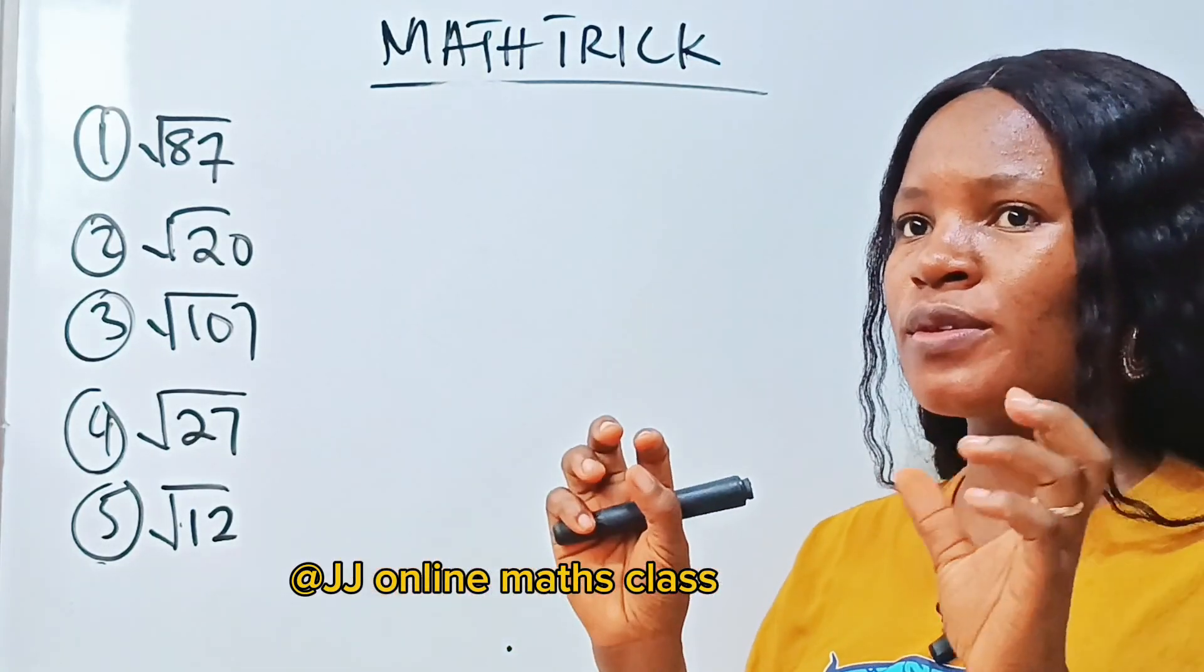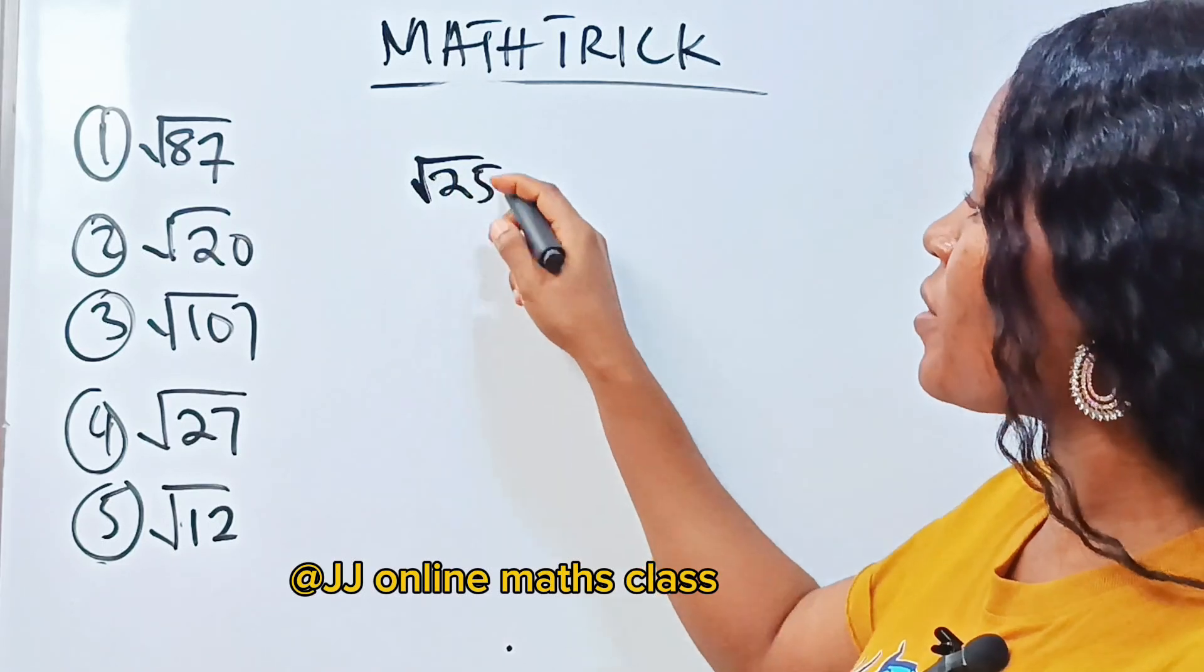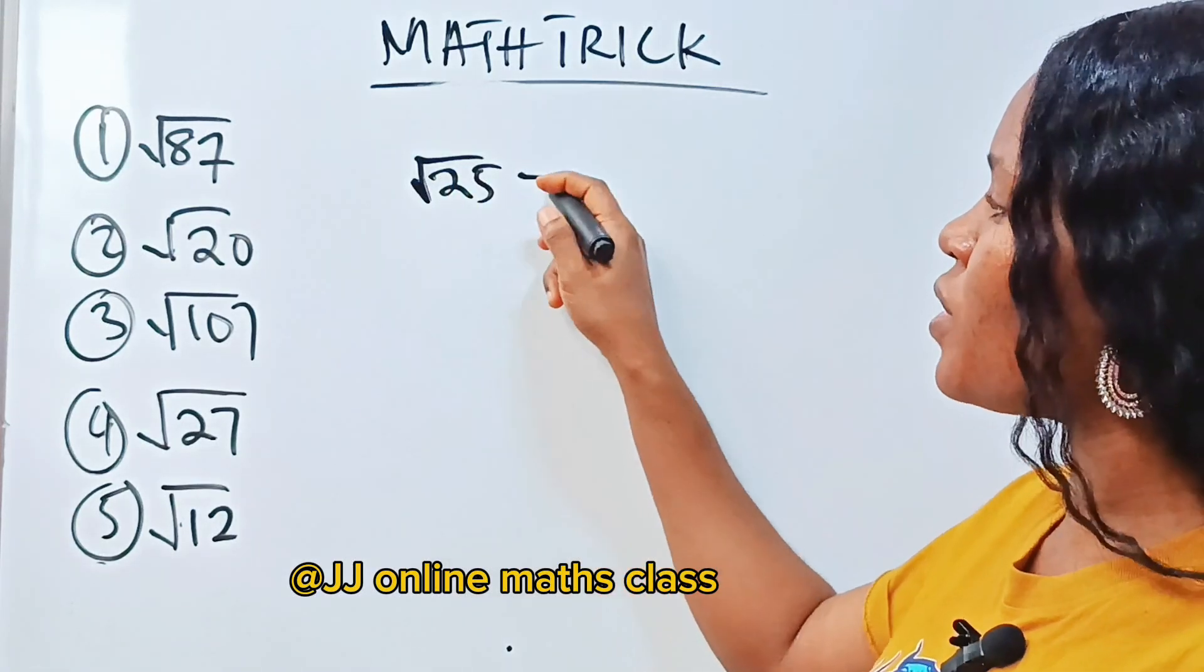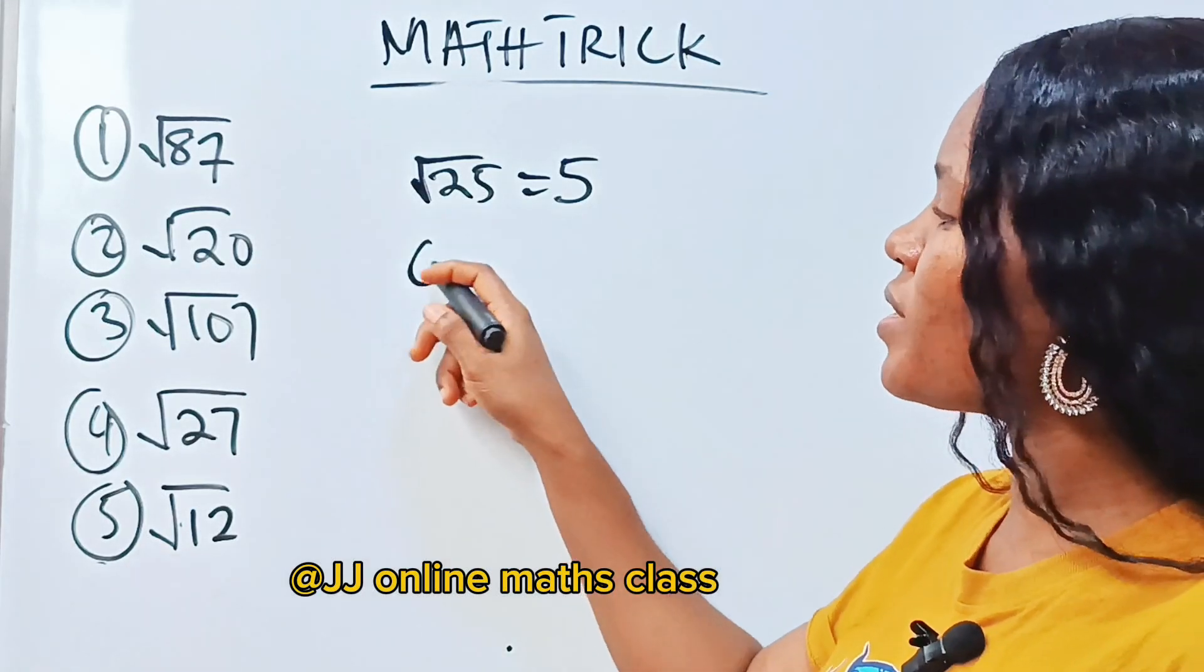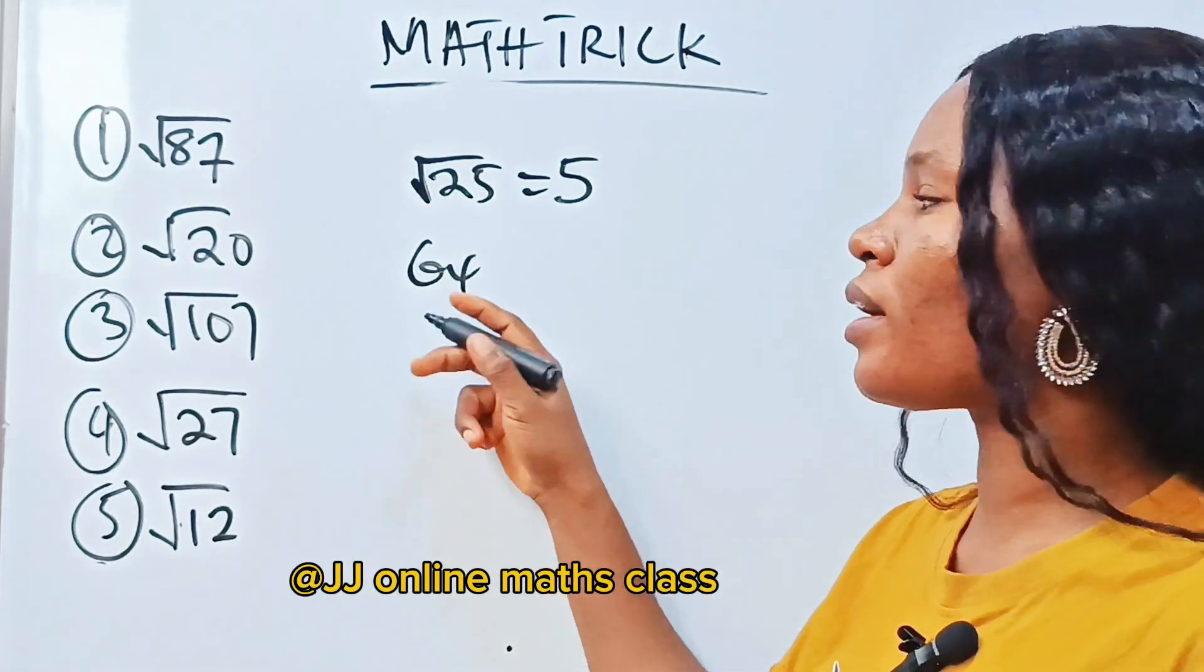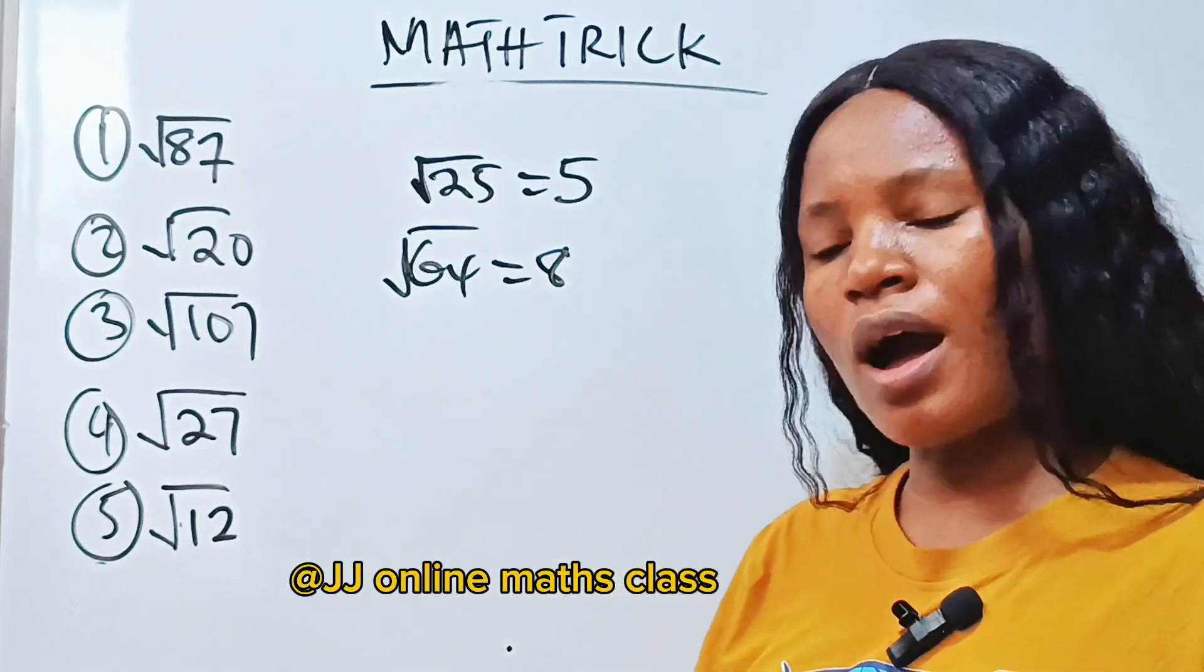Perfect squares are those numbers that you can easily find the square root. Like 25 is a perfect square because square root of 25 will give you an exact value which is 5. Same thing with 64 is a perfect square. Then square root of 64 will give you 8.